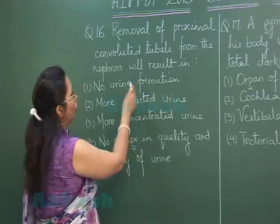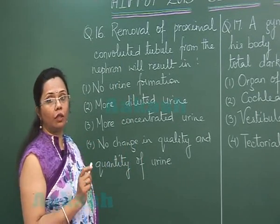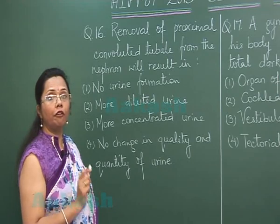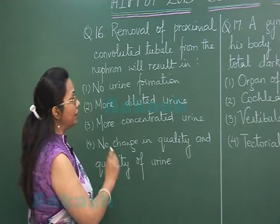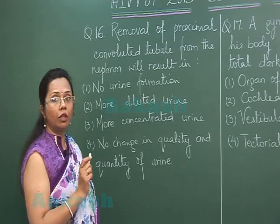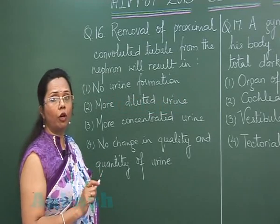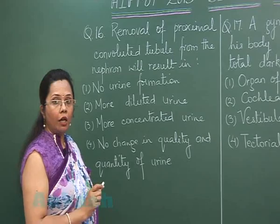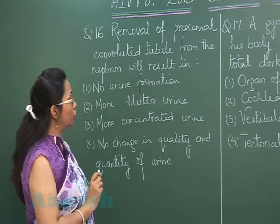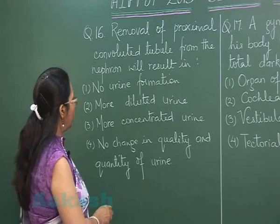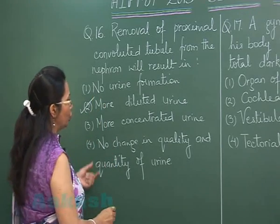PCT is the region where 2/3 of the total filtered water is absorbed. So if PCT is removed, that 2/3 water cannot be absorbed. The rest of the nephron would be absorbing just 5% of it, and the remaining 70% would not be absorbed. That is why the urine will be more dilute. So the answer would be option 2.